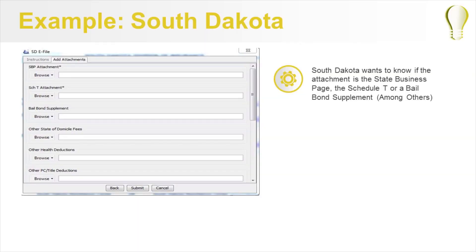An example of a state that asks for specific attachment types is South Dakota. South Dakota wants to know if the file being attached is the state business page, the Schedule T, or a bail bond supplement, among other things.